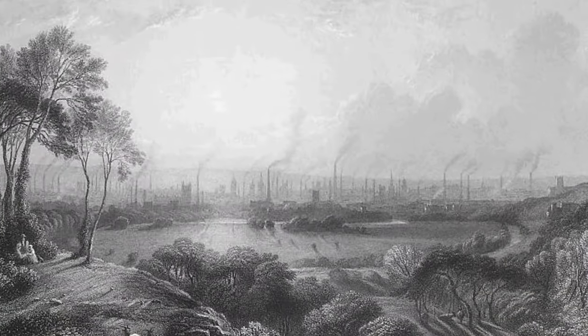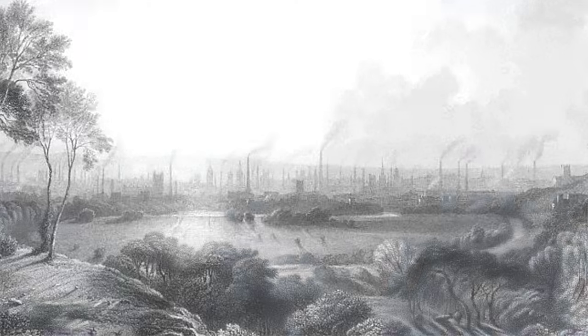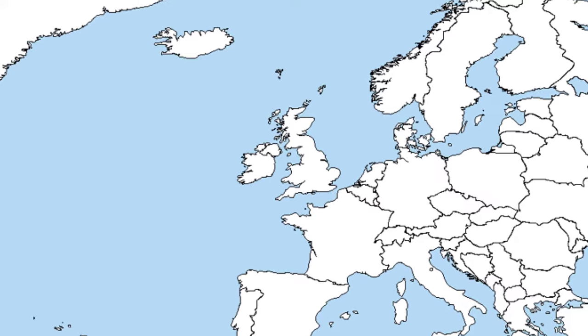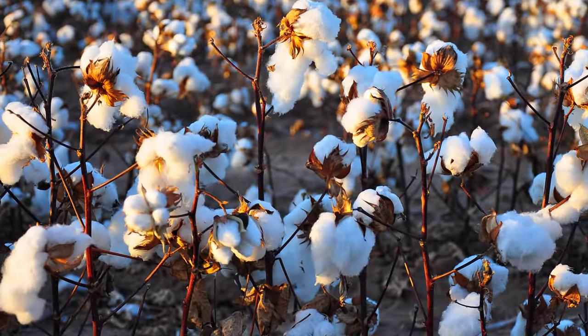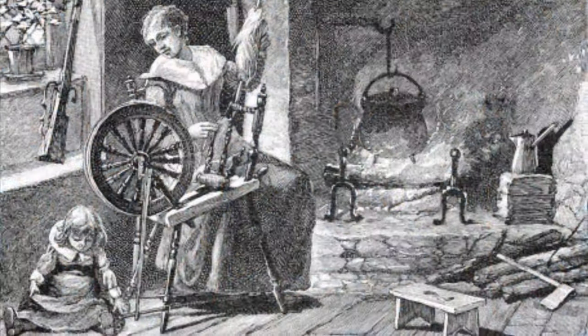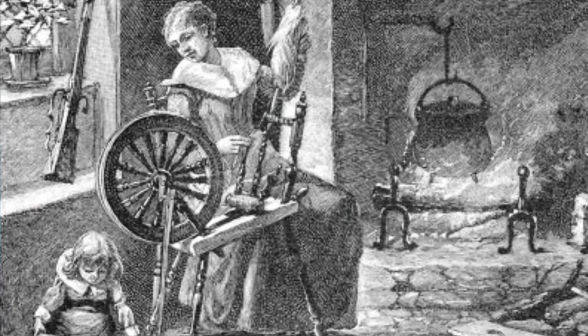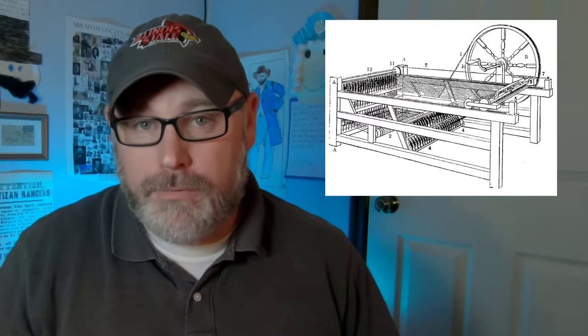Mass production means making large quantities or numbers of items. The mass production of products would lead the world into the industrial revolution. The industrial revolution really began in Britain with the production of thread for sewing. Thread was made by spinning tightly together cotton fibers, which was generally done by an individual operating a spinning wheel in their home. By 1780, British inventors had mechanized the process and could now produce finer and stronger thread than before.